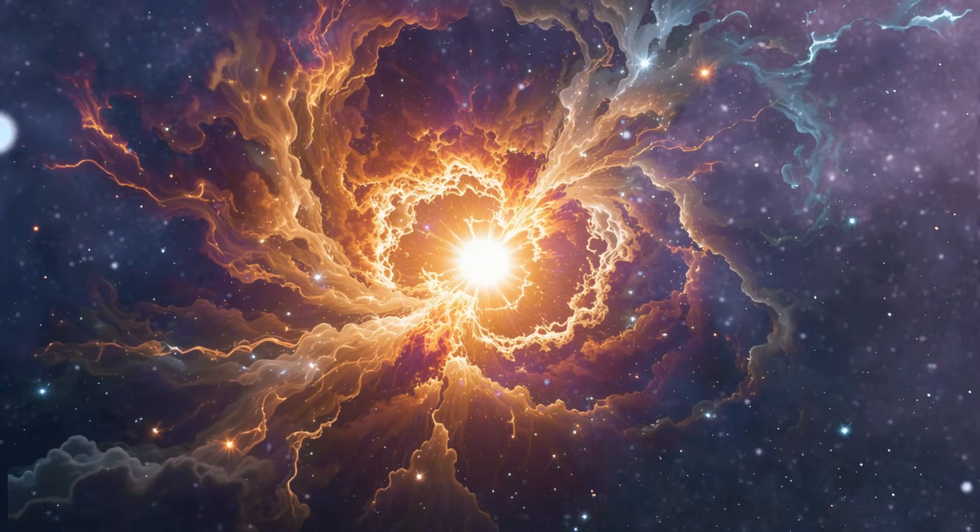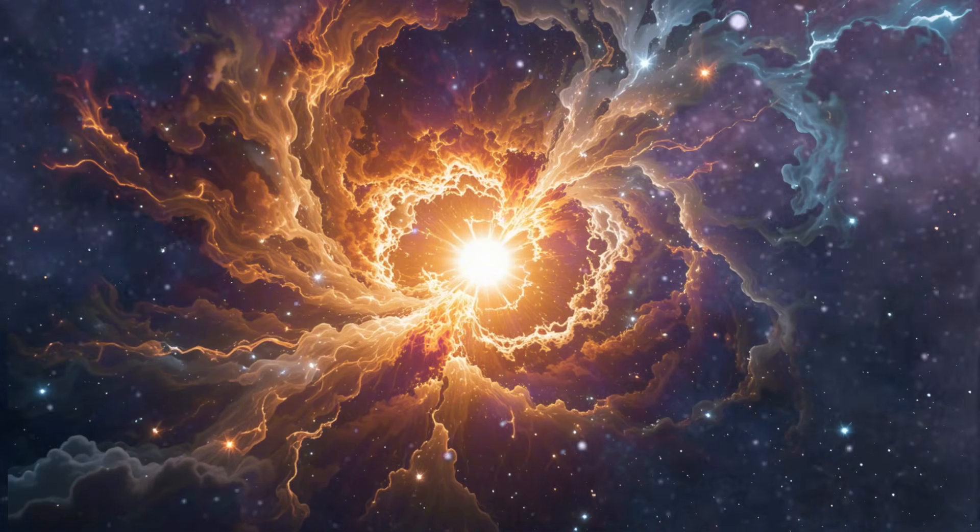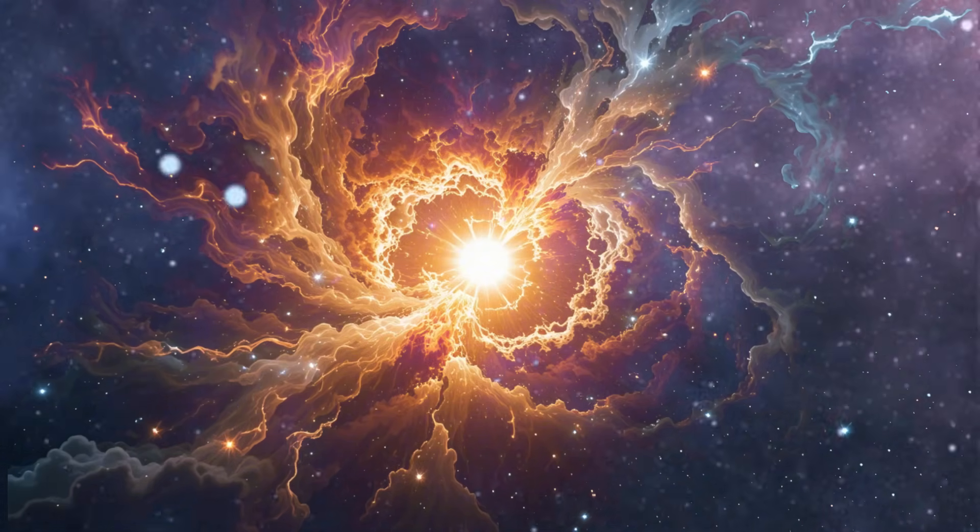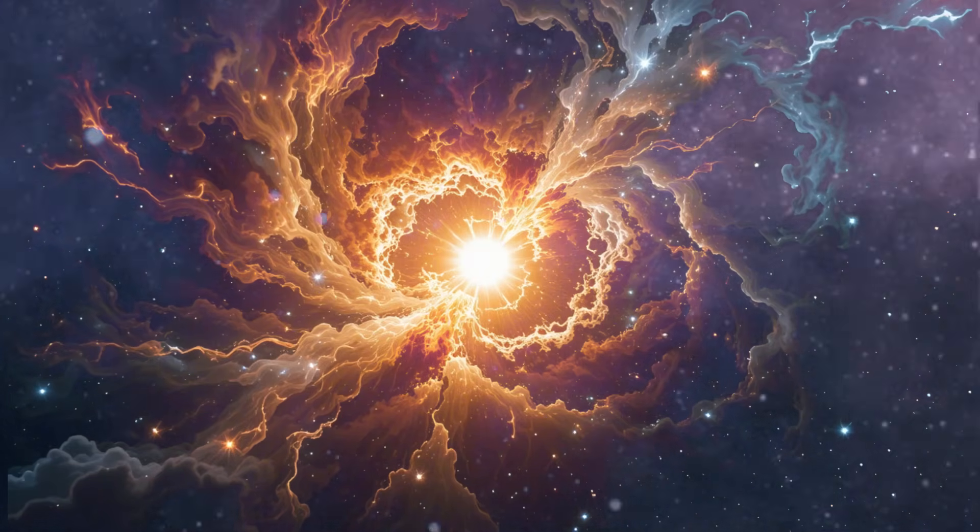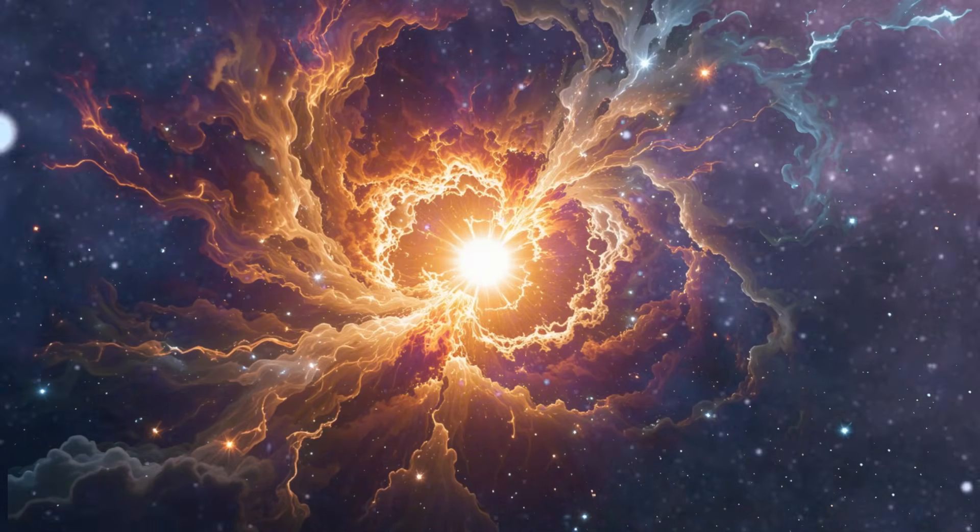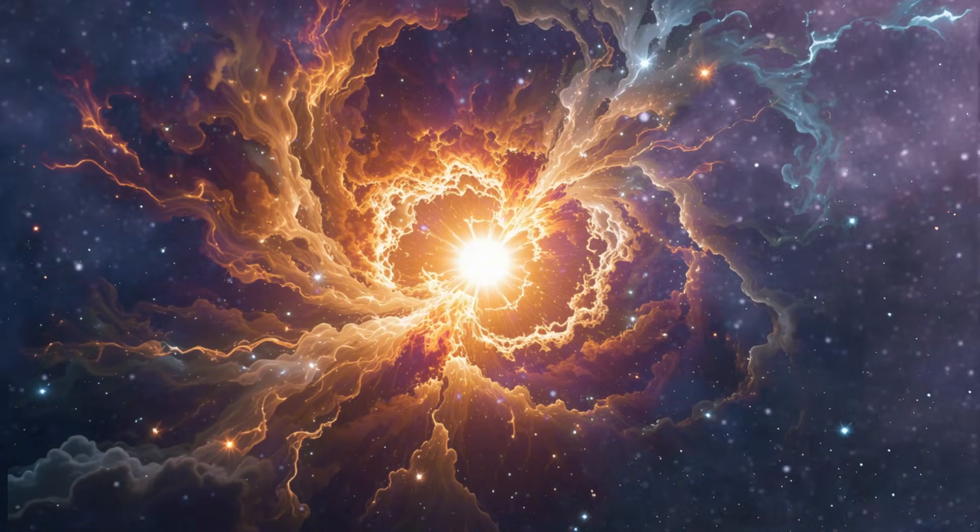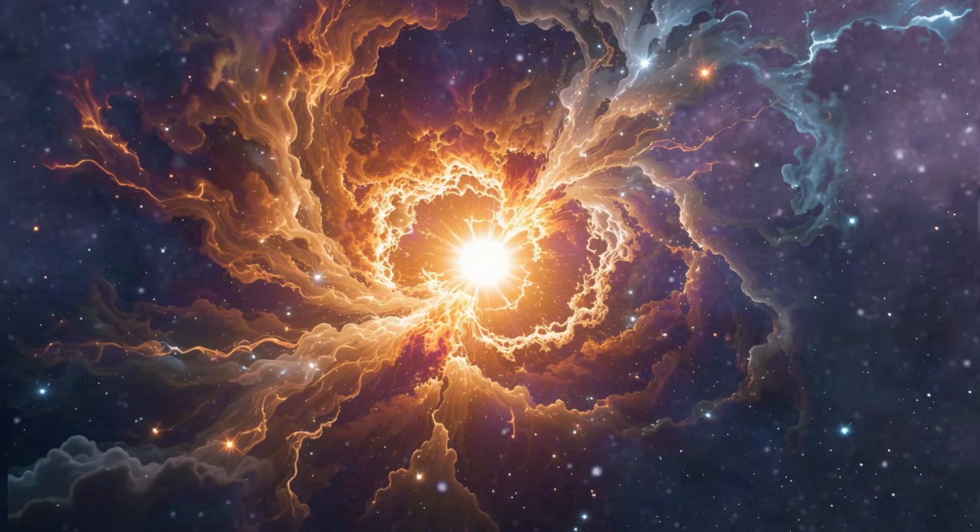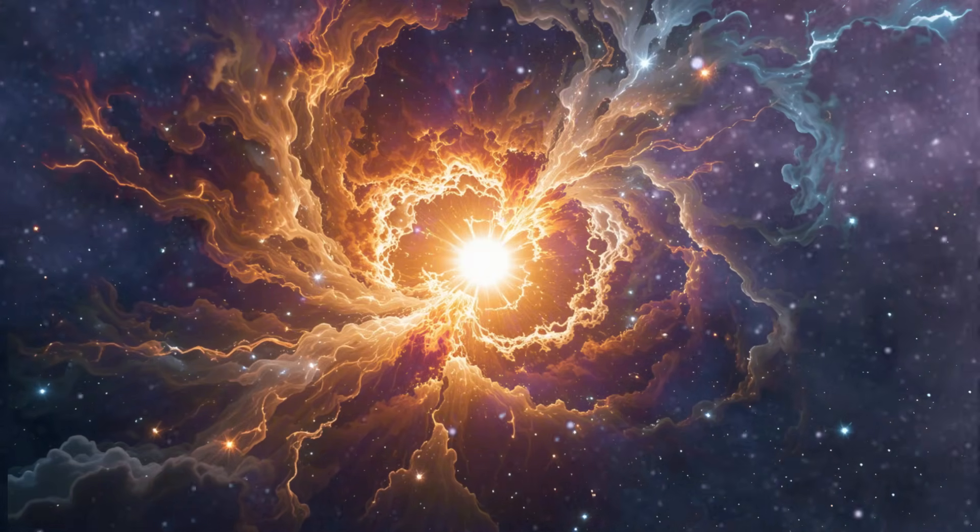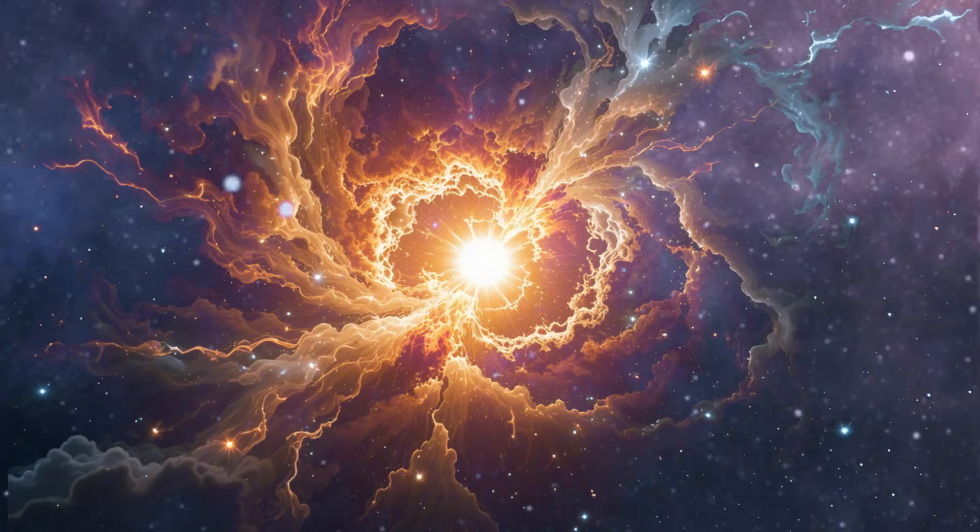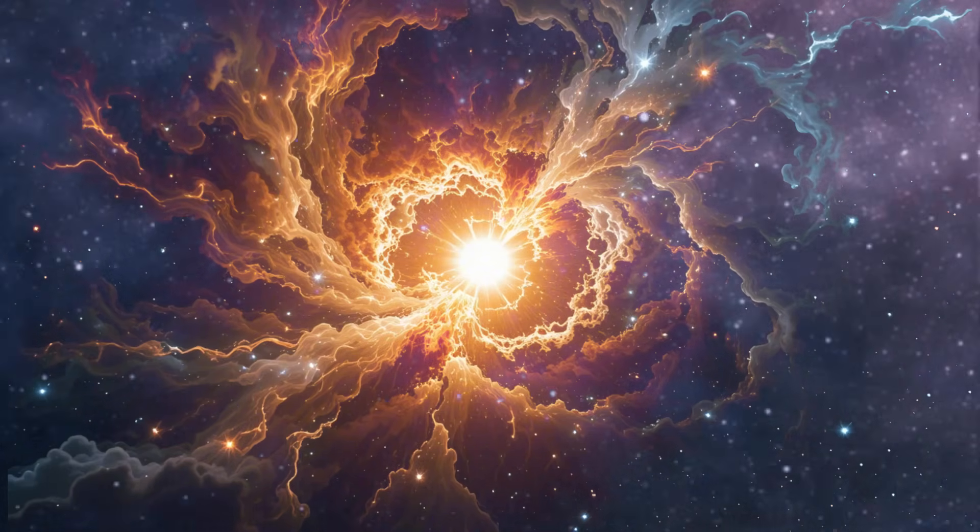This event would scatter elements like iron, calcium, and oxygen into space, enriching the interstellar medium and helping to form new stars and planets. Supernovae play a crucial role in creating the elements that make up planets, including Earth. After a supernova, the star's outer layers are expelled into space, while its core may collapse into a neutron star or, if massive enough, a black hole.